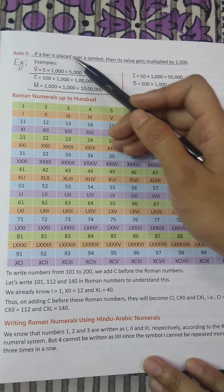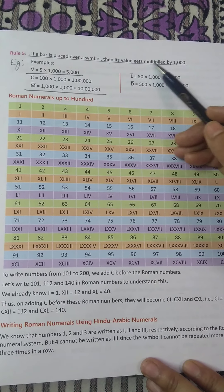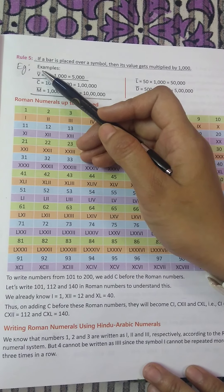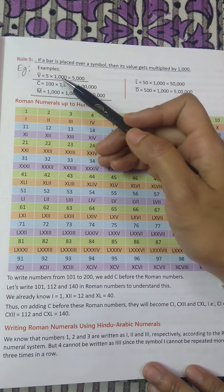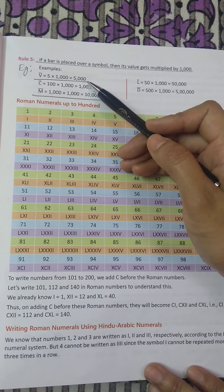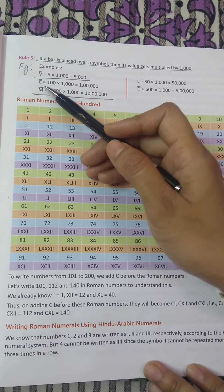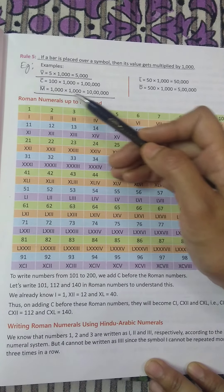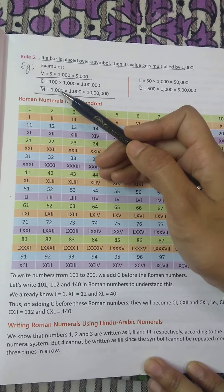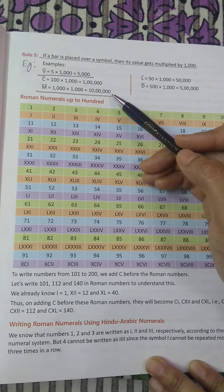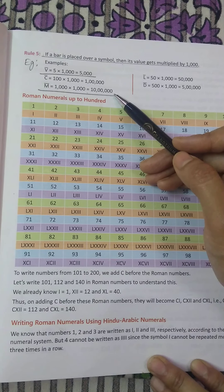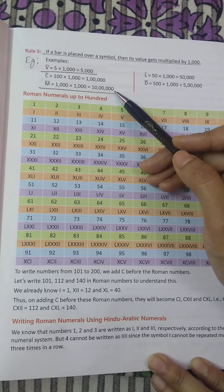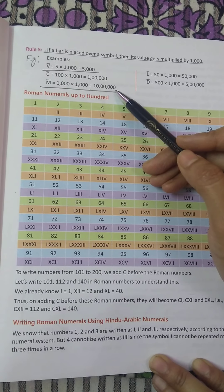The last rule lies, if a bar is placed over a symbol then its value gets multiplied by 1000. Take an example V bar, that means V is 5, bar means multiply by 1000. So it becomes 5000. Similarly M bar, M is 1000 multiplied by 1000. So count the number of zeros. 3 plus 3 that is 6. So the final result will have 6 zeros. So you may count you will get 6 zeros and it is read as 10 lakh, isn't it?